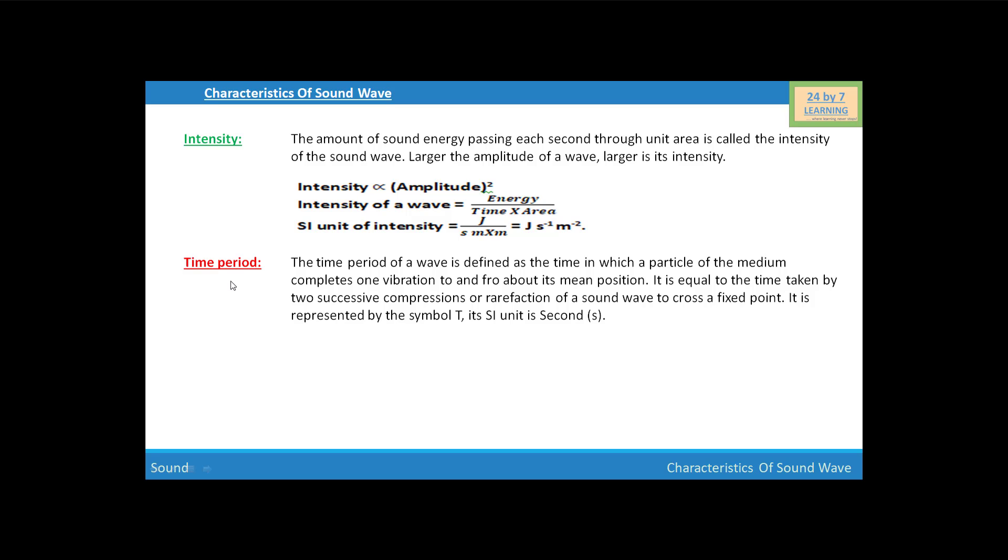Next quantity is time period. The time period of a wave is defined as the time in which a particle of a medium completes one vibration to and fro about its mean position. It is equal to the time taken by two successive compressions or rarefactions of a sound wave to cross a fixed point. It is represented by the symbol capital T and its SI unit is second.